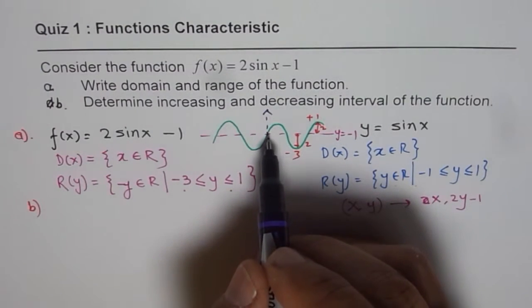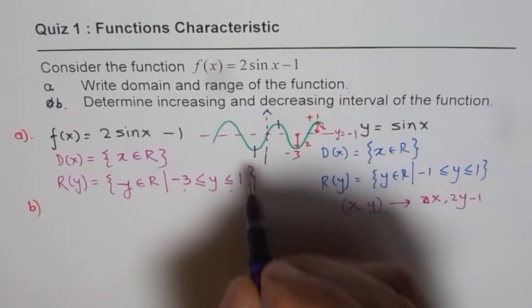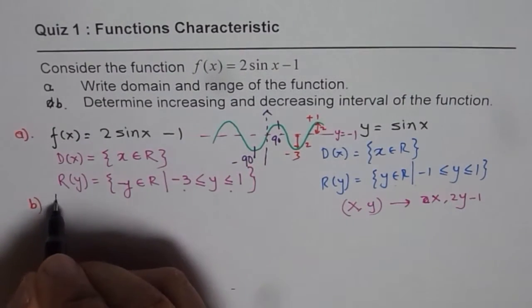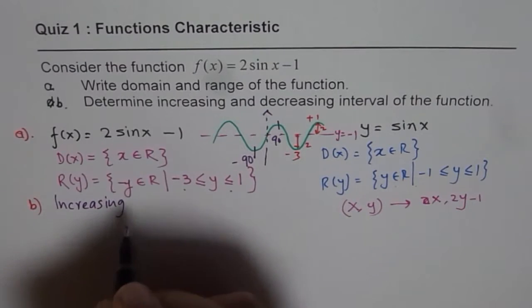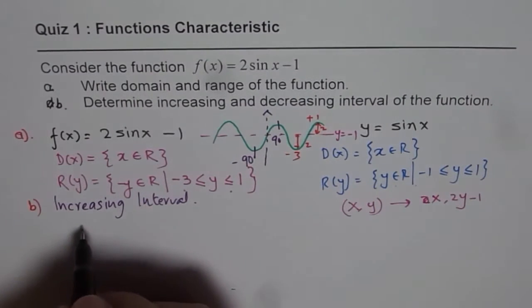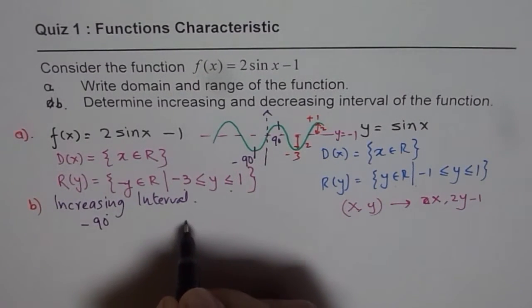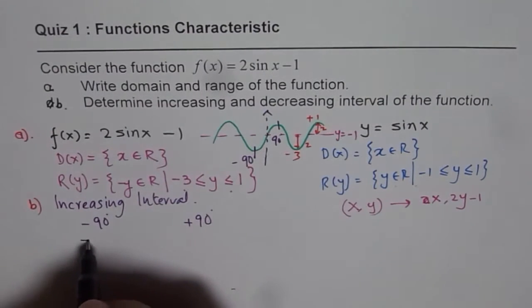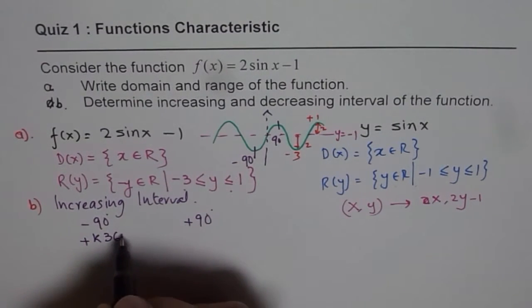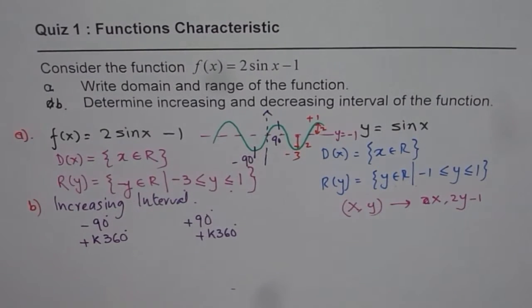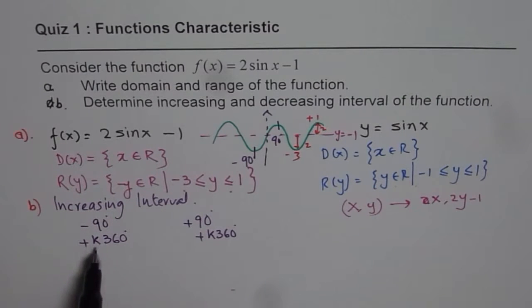The sine function increases from −90° to +90°. So the increasing interval starts at −90° and goes to +90°. Since it is a periodic function, it repeats, so we add k·360° to each bound, where k belongs to the integers.